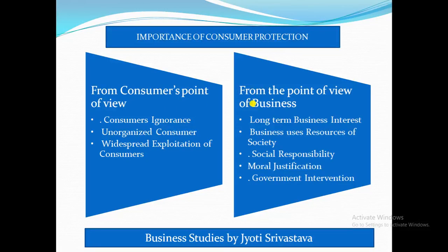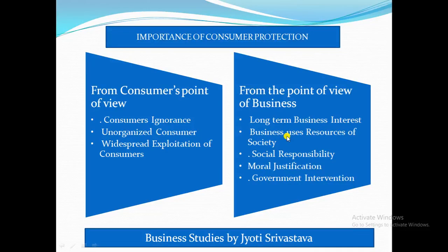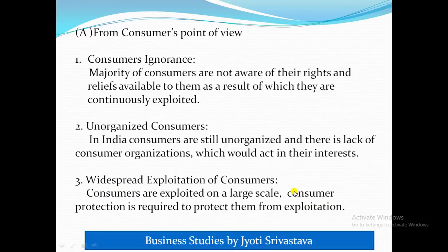From the consumer point of view, the key points are: consumer ignorance, unorganized consumer, and widespread exploitation of consumer. From the business point of view, the points are: long-term business interest, business uses resources of society, social responsibility, moral justification, and government intervention. Let's go through each point one by one.